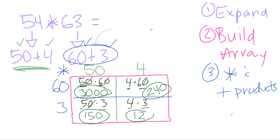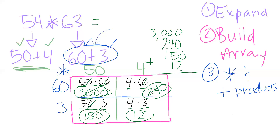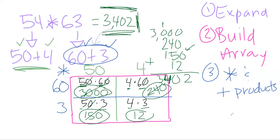Adding 3,000 plus 240 plus 150 plus 12, making sure to line up place values. I apologize — this is a bit crowded. Our final product is 3,402. In a classroom I'd say to redo it neatly, so I apologize for the messiness here.